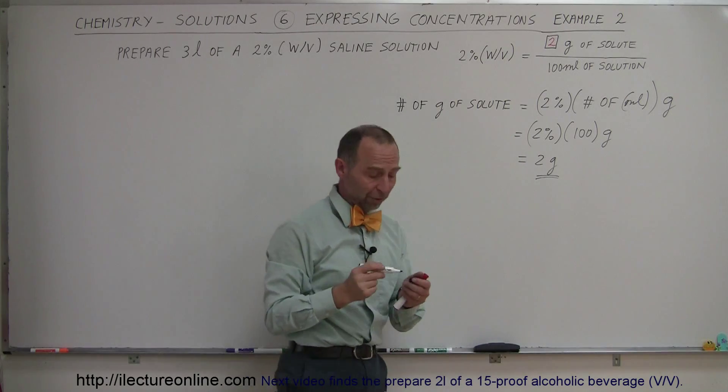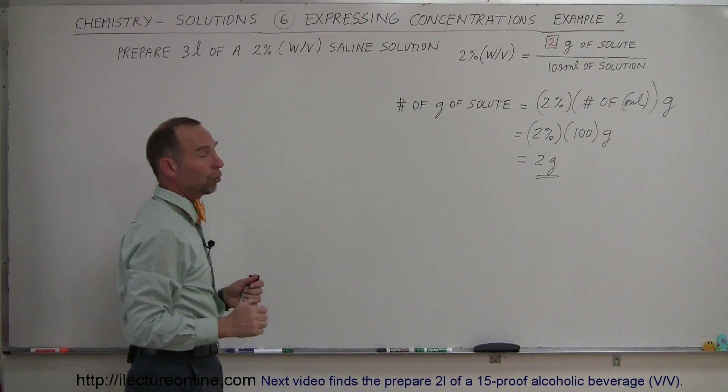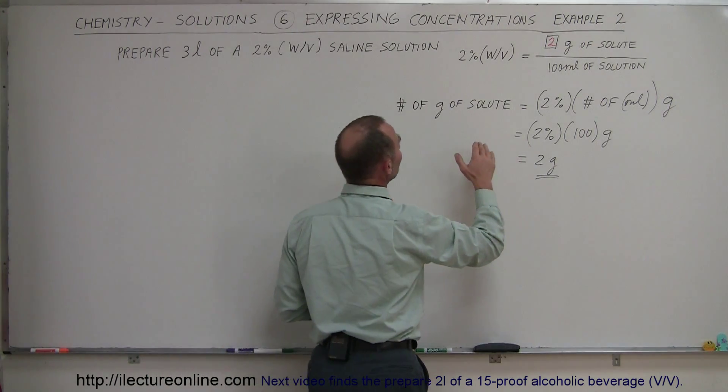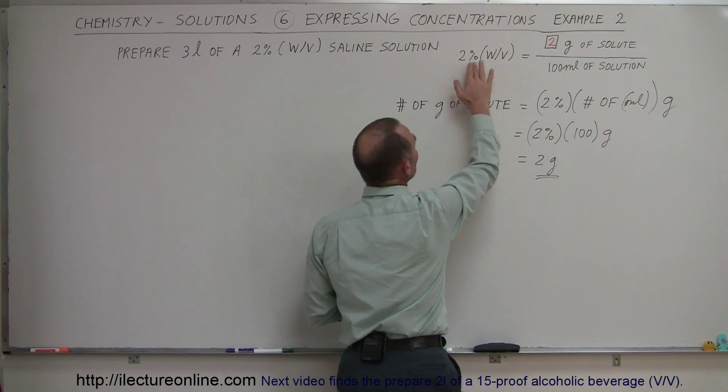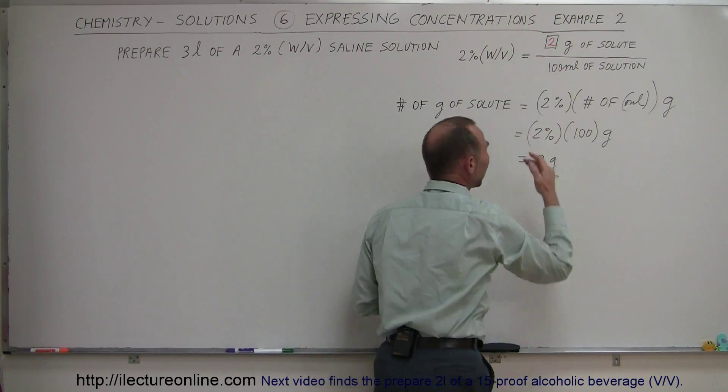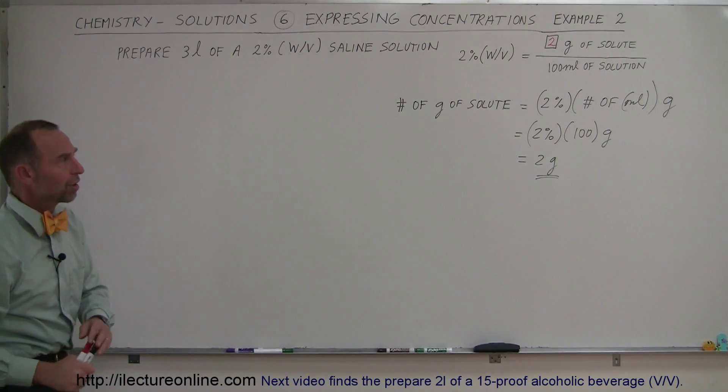So that requires 2 grams. If you want to have a 2% weight in volume solution of any kind, in this case it's a saline solution, if it's 2%, we need 2 grams for 100 milliliters. If it's 3%, we need 3 grams for 100 milliliters. 5%, we need 5 grams for 100 milliliters and so forth. So that's pretty straightforward.